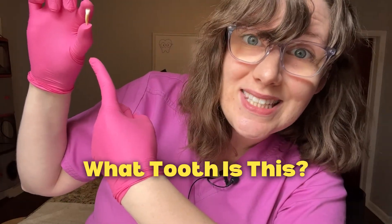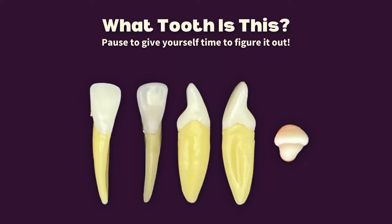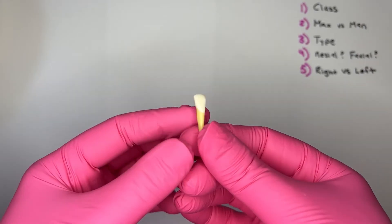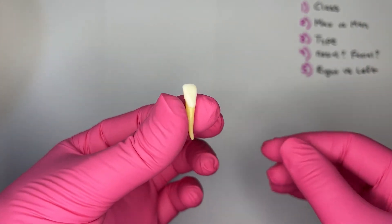What tooth is this? Round six. Let's identify this tooth using a five-step process.